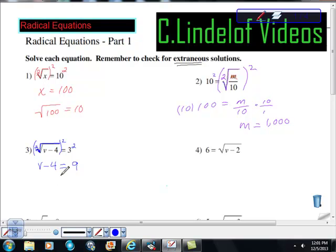Ooh, sorry, that's really wrong. I'm going to add 4 to both sides, so we get V is equal to 13, all right? All right, so really good.